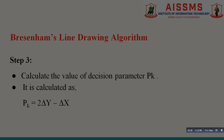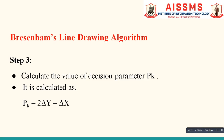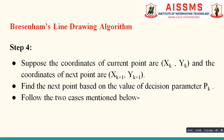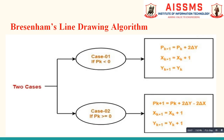Our next step is to calculate the value of the decision parameter pk, which is calculated by the standard equation: 2 times delta y minus delta x. Here pk tells us where to plot the next point of the line. We then suppose the coordinates of our current point as (xk, yk) and coordinates of the next point to be plotted as (xk+1, yk+1). We find the next point based on the value of pk. There are two conditions: pk less than zero, and pk greater than or equal to zero.